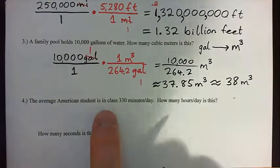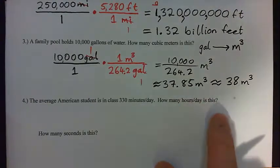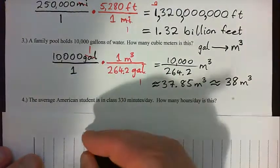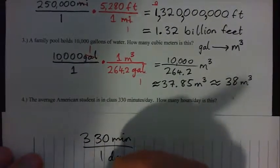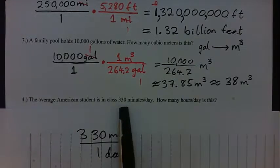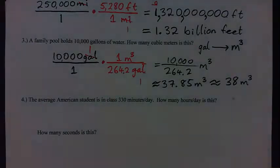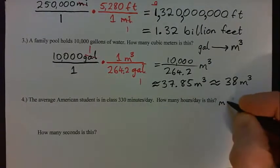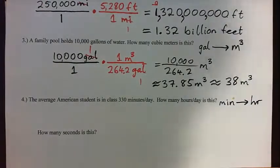Question four: the average American student is in class 330 minutes a day — how many hours per day is this? We just want to go from minutes to hours. We're starting with minutes and we want to get hours.